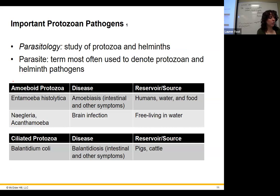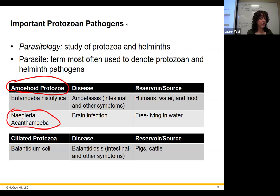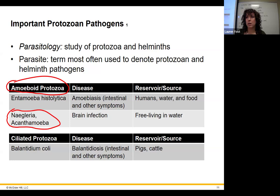The amoeboid protozoan pathogens include Entamoeba histolytica, which causes diarrhea. Then we have Naegleria fowleri and Acanthamoeba — the brain-eating amoebas. They get into your sinus cavity and transport to your brain. It's 97% fatality once symptoms start. It's very uncommon and rare, but you don't want it. Don't use tap water in your neti pots — boil it first or use distilled water. I'm telling you it can be in your tap water.